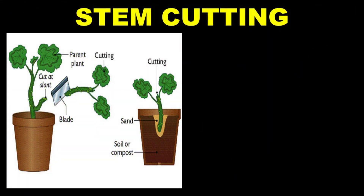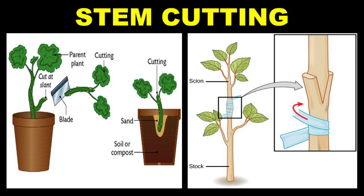In stem cutting, you cut the stem and place it in the ground in a slanting position and let it grow normally. You can also take two stems in a slanting position, place one over the other, put some soil, and sow it in the ground — it will grow into a new plant very quickly.